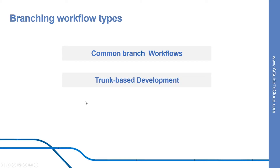Let's look into what trunk-based development is. Trunk-based development is a logical extension of centralized workflow. The core idea behind the feature branch workflow is that all feature development should take place in a dedicated branch instead of the master branch. This encapsulation makes it easy for multiple developers to work on a particular feature without disturbing the main code base. It also means the master branch should never contain broken code, which is a huge advantage for continuous integration environments.